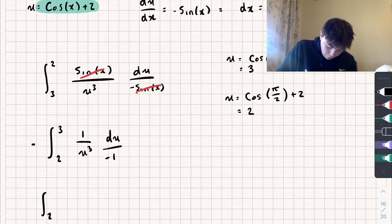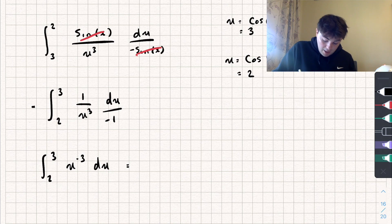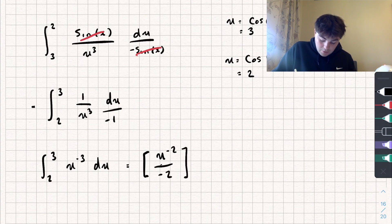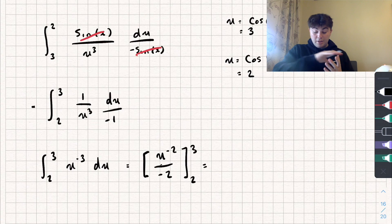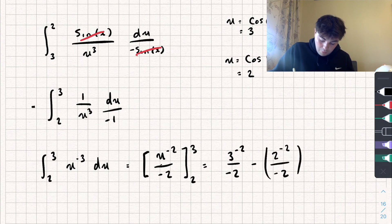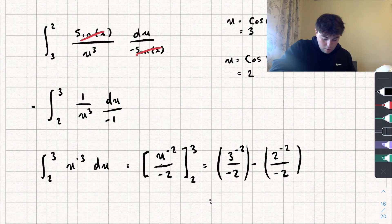Factoring out the negative 1 turns the integral positive again. So now we have the integral between 2 and 3 of u to the power of negative 3 with respect to u. Adding 1 to the power gives u to the power of negative 2, divided by negative 2, evaluated between 2 and 3. Substituting in: 3 to the negative 2 divided by negative 2, minus 2 to the negative 2 divided by negative 2. Using the calculator, the answer is 5 over 72.